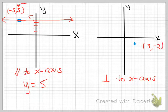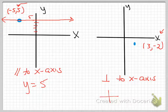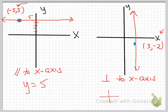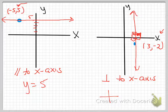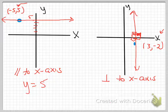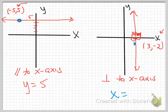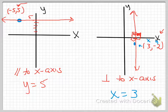The next one asks for a line perpendicular to the x-axis. Perpendicular means two lines intersect — I draw a line that crosses the x-axis making a 90-degree angle. To write the equation, I look at which axis it touches: it touches the x-axis. So my equation is x equals something. Where does it touch the x-axis? At three. So x equals three.